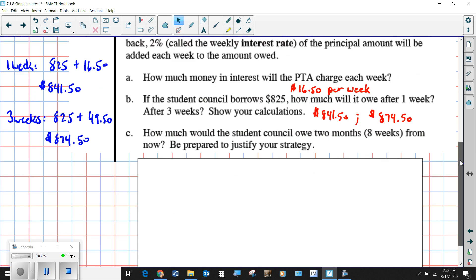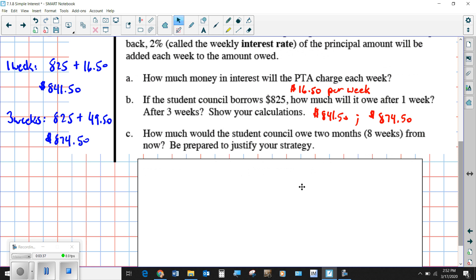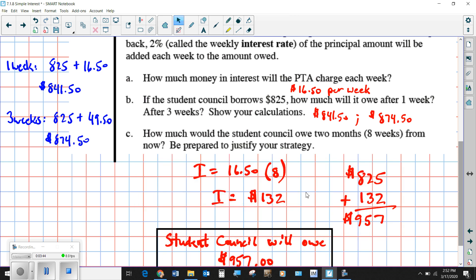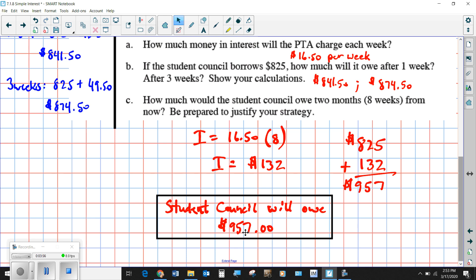Now for the last question, how much would you have to owe if you borrowed for two months or eight weeks? It's $16.50 per week, so you'd have to pay $132, because that's $16.50 times eight. Then that would get added on to the $825, so you'd have to pay back $957. You might think that's a ripoff to have to pay back more than what you borrowed, but it's not your money. If you want to borrow their money, you have to be willing to pay the interest. That's just how it works.